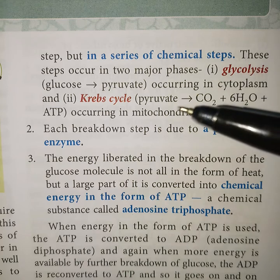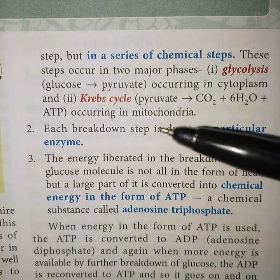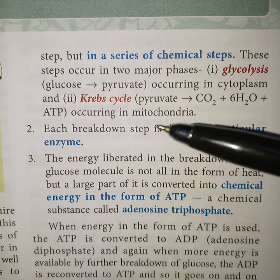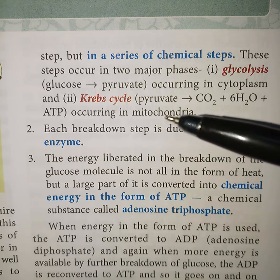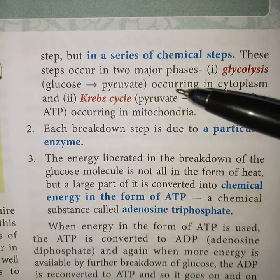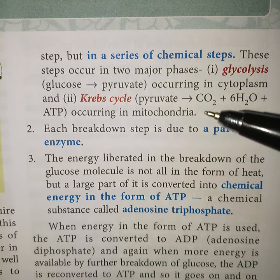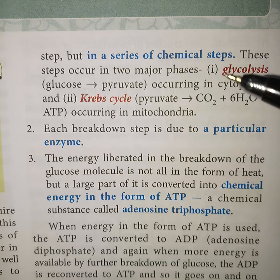The second phase is the Krebs cycle, which occurs in the mitochondria, where pyruvic acid undergoes complete oxidation, releasing ATP, carbon dioxide, and water.